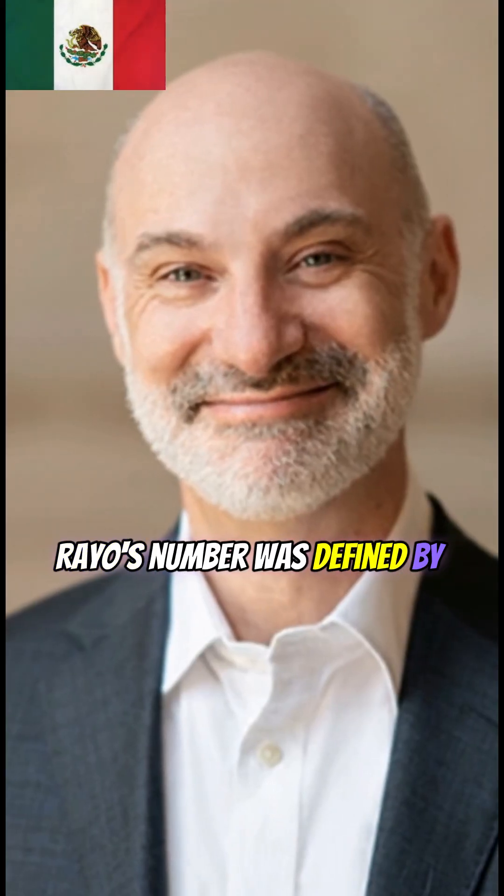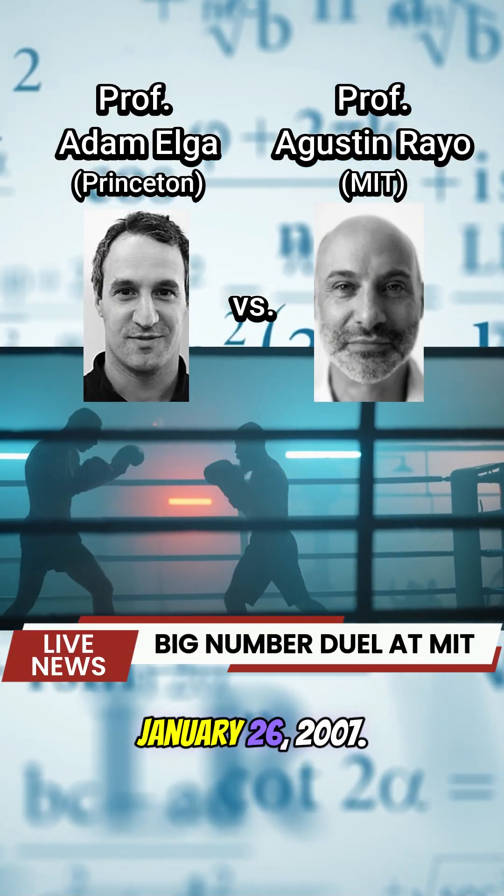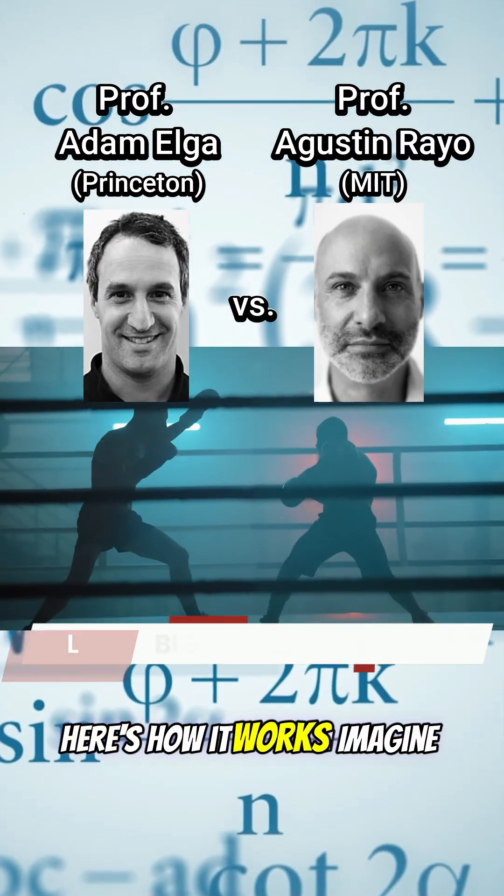Rayo's number was defined by Mexican philosophy professor Agustin Rayo during a big number duel at MIT on January 26, 2007. Here's how it works.